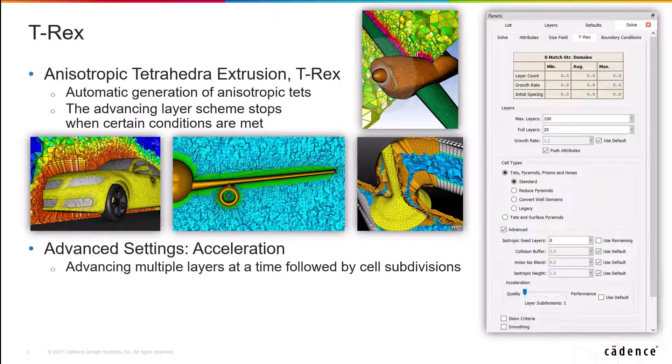Now, the new feature that I want to talk to you about in this video aims at accelerating the performance of the T-Rex algorithm by forcing the solver to advance multiple layers at a time when possible. This way, the algorithm will take a larger step in each pass based on the cumulative height of multiple layers, which means it will skip a lot of computations that will be necessary for each of those layers. Finally, the solver will go back and perform cell subdivisions based on the number of layers that were skipped.